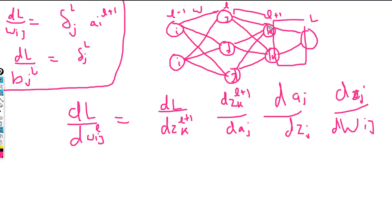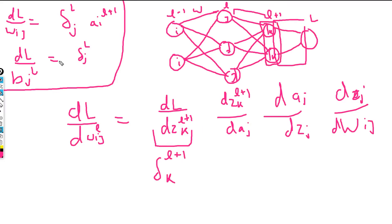This loss is based on these parameters, and we have already found all of these states. The activation value is affected by z, and z is affected by the weight matrices. This first part is nothing but delta_k(l+1) — the delta of the next layer that we have previously found.